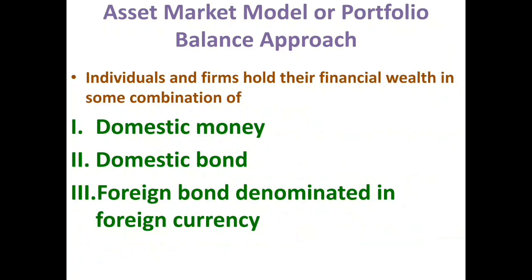The incentive for holding domestic bond is that they carry a rate of interest, but they do carry the risk of default and variability of market value over time. The benefit of holding foreign bond is that it allows an investor to spread risk, because disturbances of lower return in one country may not appear at the same time in other countries. So risk spreading is possible by holding foreign bond. But it carries an additional risk in the sense that it is denominated in foreign currency, which may depreciate resulting in a capital loss — that is, foreign bond always involves a foreign exchange risk.